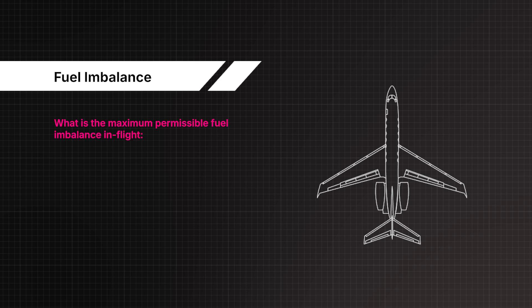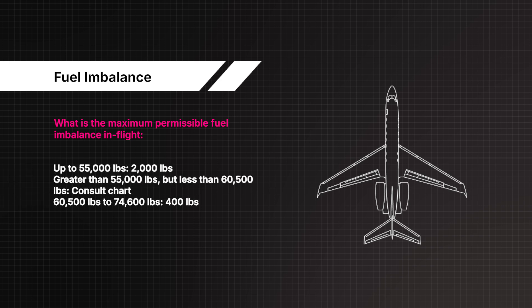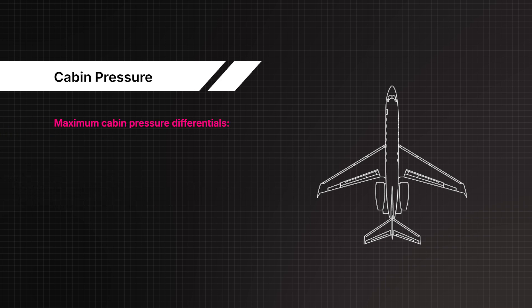Maximum permissible fuel imbalance in flight: up to 55,000 pounds — 2,000 pounds; greater than 55,000 pounds but less than 60,500 pounds — consult chart; 60,500 pounds to 74,600 pounds — 400 pounds. Maximum cabin pressure differential: 9.8 PSI; 0.3 PSI for taxi, take-off or landing.